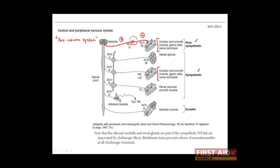The sympathetic division follows the same rule. Here is the soma of the first neuron, which is found in the spinal cord, and its axon extends out and reaches a ganglion. The second neuron has its soma within this ganglion and extends out to reach its own target organ — so again, neuron number one and neuron number two.